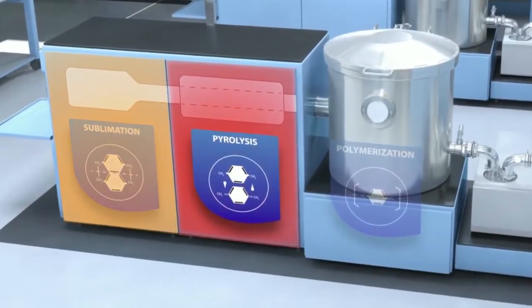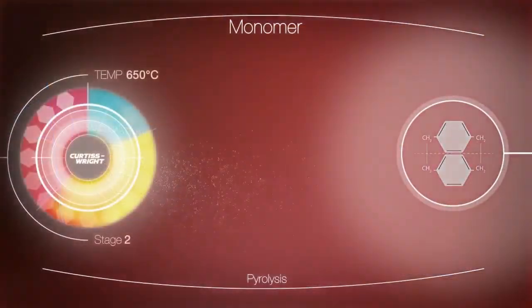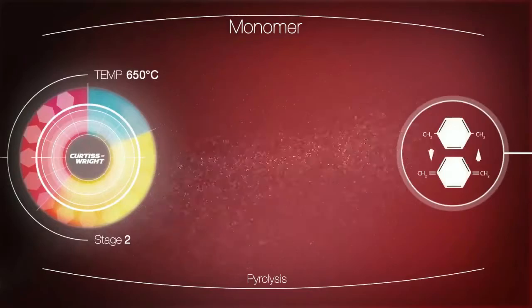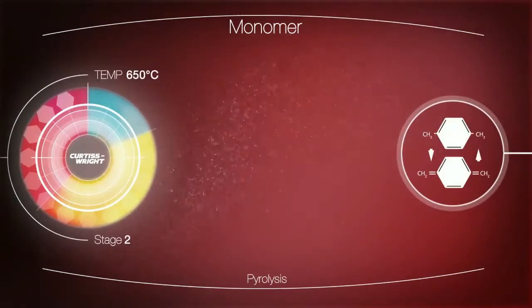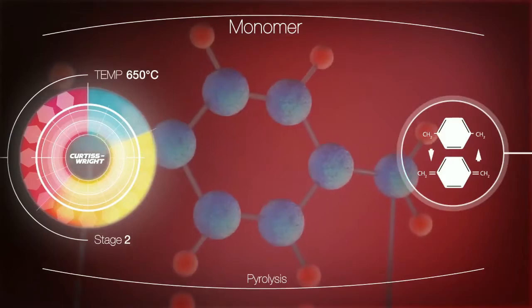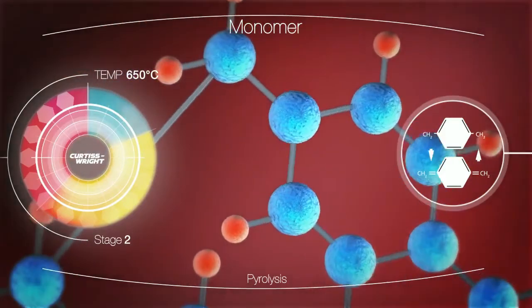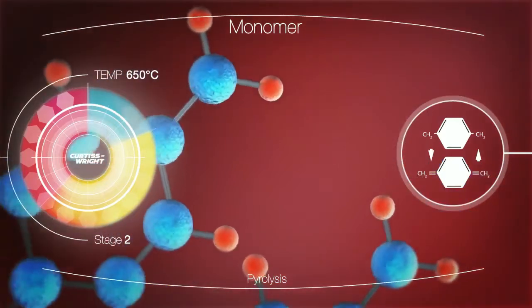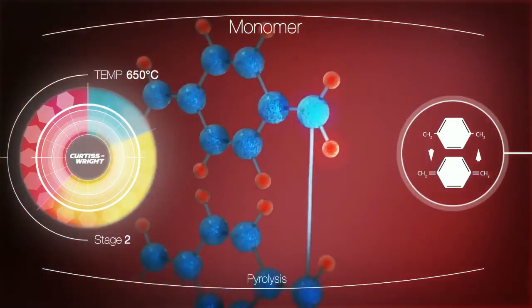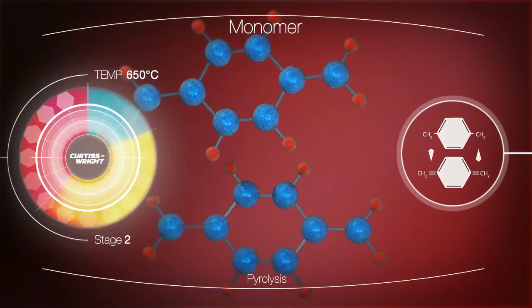The second stage is pyrolysis, where the gaseous dimer is heated in a furnace. As the temperature rises, the molecular structure changes and begins to crack or break down. At over 650 degrees Celsius, the dimer is cleaved or split into monomers.